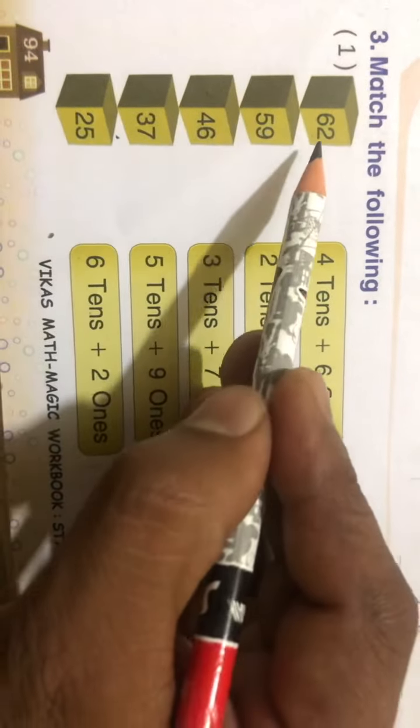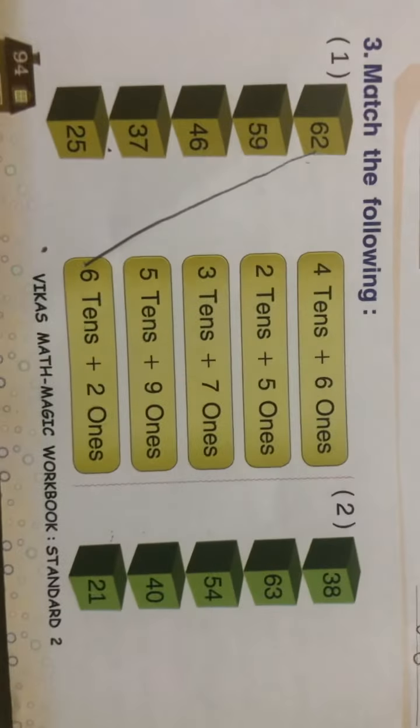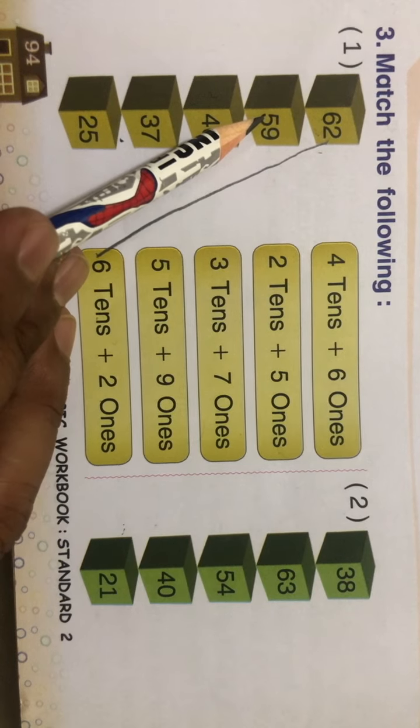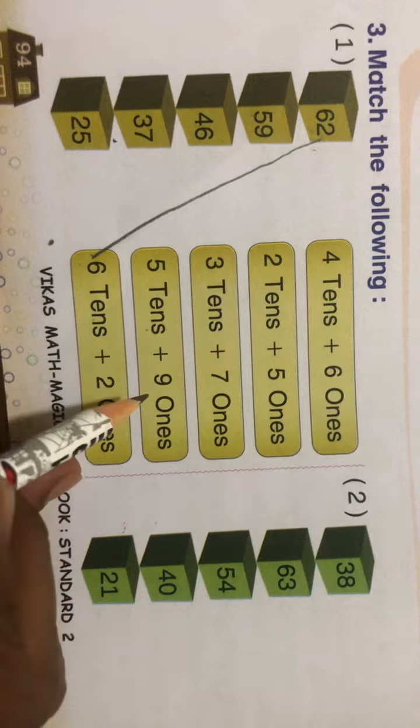So you have to match it with the correct expanded form. Same way, fifty-nine. Five is here at tens place, so five tens, so here it is. And nine is at ones place, so nine ones is here.